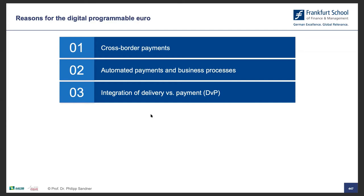Delivery versus payment also applies to production and service processes. For example, when consuming car sharing or a digital good, delivery happens in one IT system and payment in another — the credit card system. These processes run fairly smoothly, but more efficiency can be gained. Credit card payments cost 0.5% to 2% of transaction value. Integrating delivery versus payment on a blockchain network enables real-time settlement at close to zero transaction cost. This is called DVP.